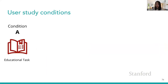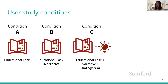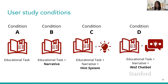I designed four different user study conditions. In condition A, students completed the educational task only. In condition B, students completed the same task embedded in a narrative. In condition C, I added the hint system. In condition D, the hint system was replaced with a Wizard of Oz chatbot. The major difference between C and D is that hints came in linear orders one by one, while in the chatbot the wizard could choose which hint was most relevant to the student based on their reactions, rather than sending them in a preset order.